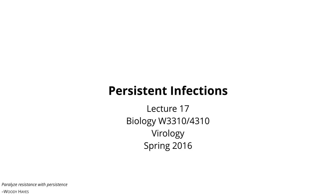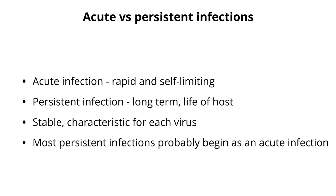Today we're going to continue our discussion of the two different general patterns of virus infections by talking about persistent infections. Last time we talked about acute infections, which we defined as an infection that is rapid and self-limiting. Today, persistent infections, which we'll define as long-term. In fact, they last the life of the host. So it's a very clear distinction from acute infections, and we'll talk about different kinds of persistent infections today.